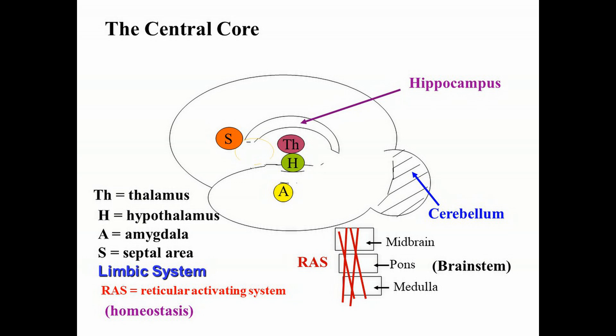Beneath the midbrain, you have the pons, which literally is the Latin word for a bridge. The pons forms a bridge between the two halves of the cerebellum when the brain is drawn accurately. The pons is important for pain perception and for our sleep-wake cycle. Interestingly, there is a syndrome called locked-in syndrome that occurs when there's severe damage to the pons. The individual is paralyzed, and the only part of the body that can be moved are the eyelids, so the individual can only communicate by blinking once for yes or twice for no.